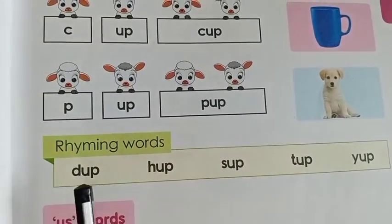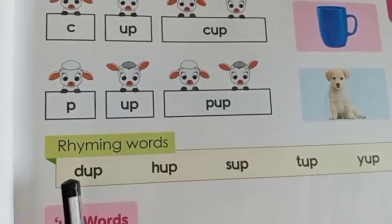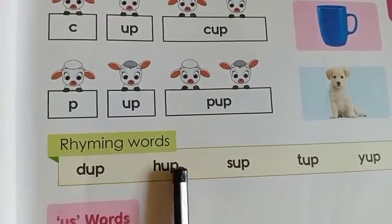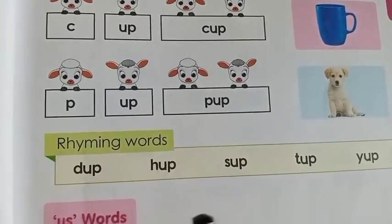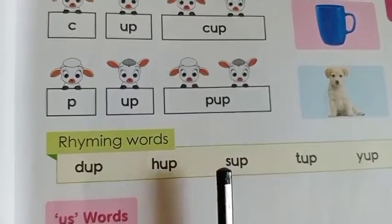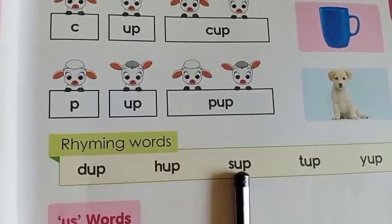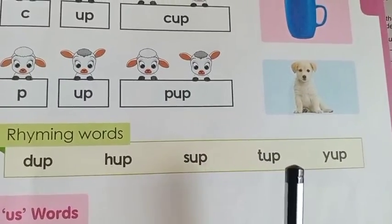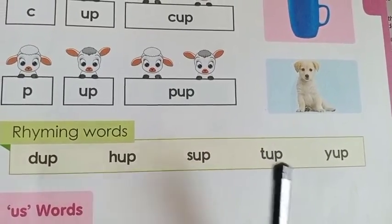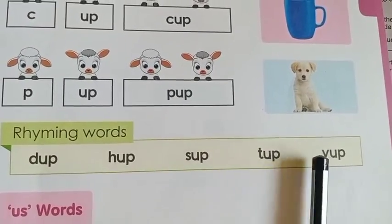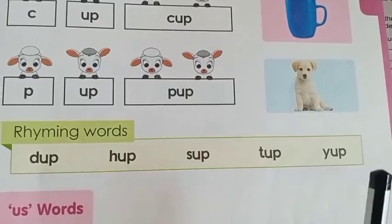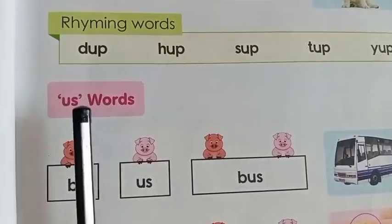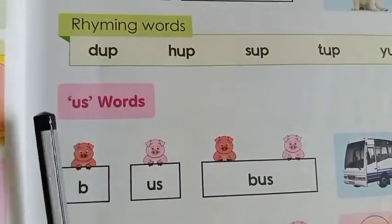D-D: up — dup. H-H: up — hup. S: up — sup. D-D: up — tup. Y: up — yup. US words.